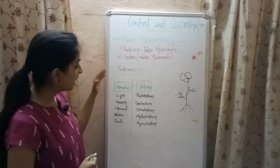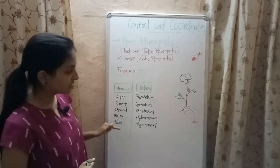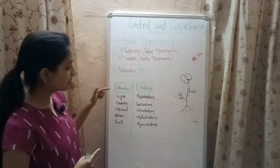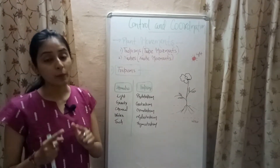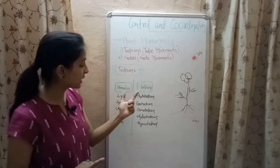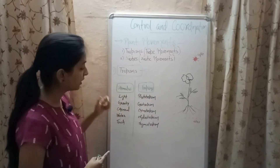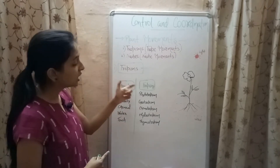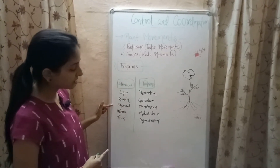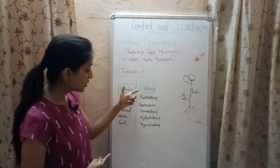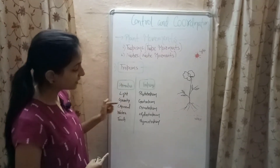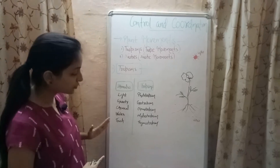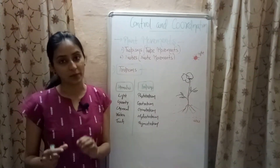There are five types of stimuli which give rise to five types of tropisms. The tropism produced in response to light is phototropism; in response to gravity is geotropism; in response to chemicals is chemotropism; in response to water is hydrotropism; and in response to touch is thigmotropism.